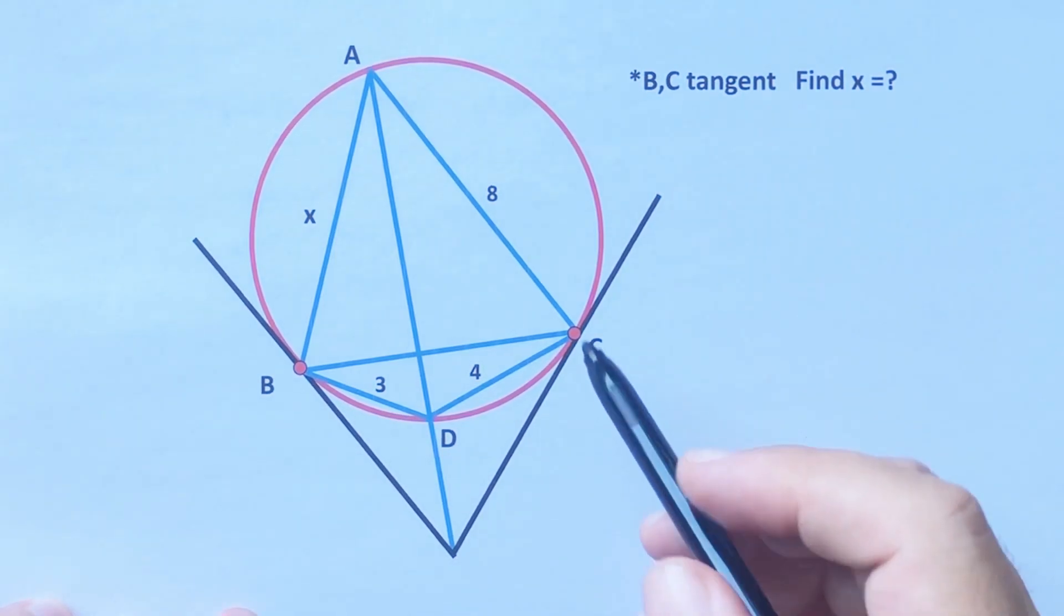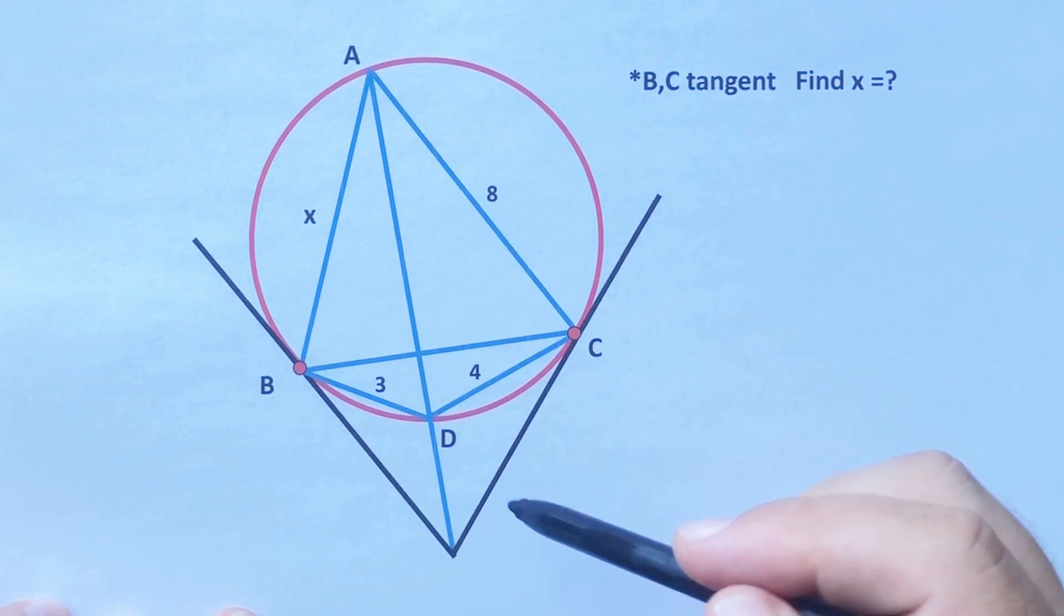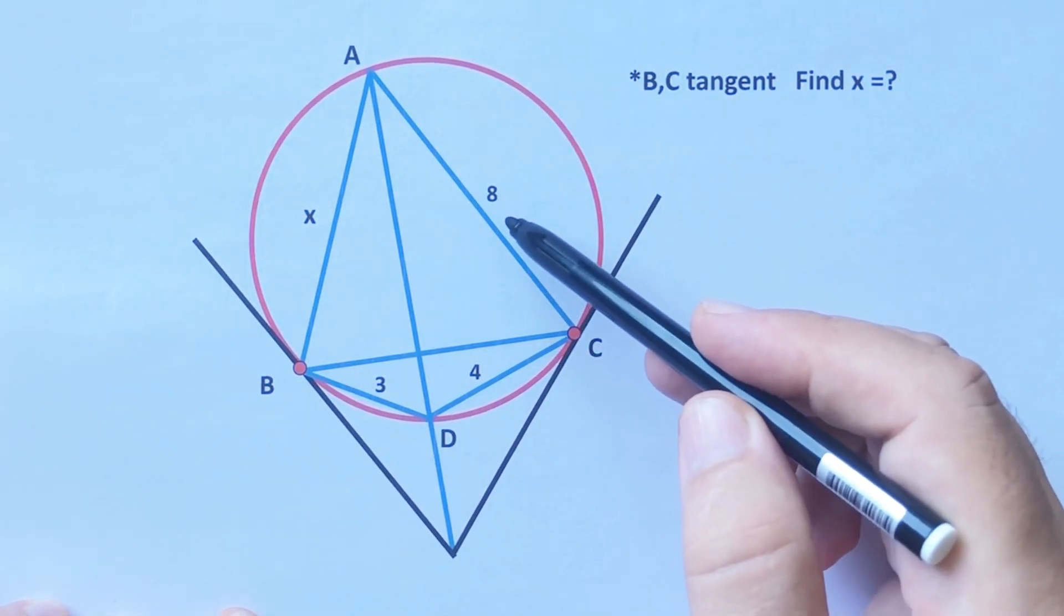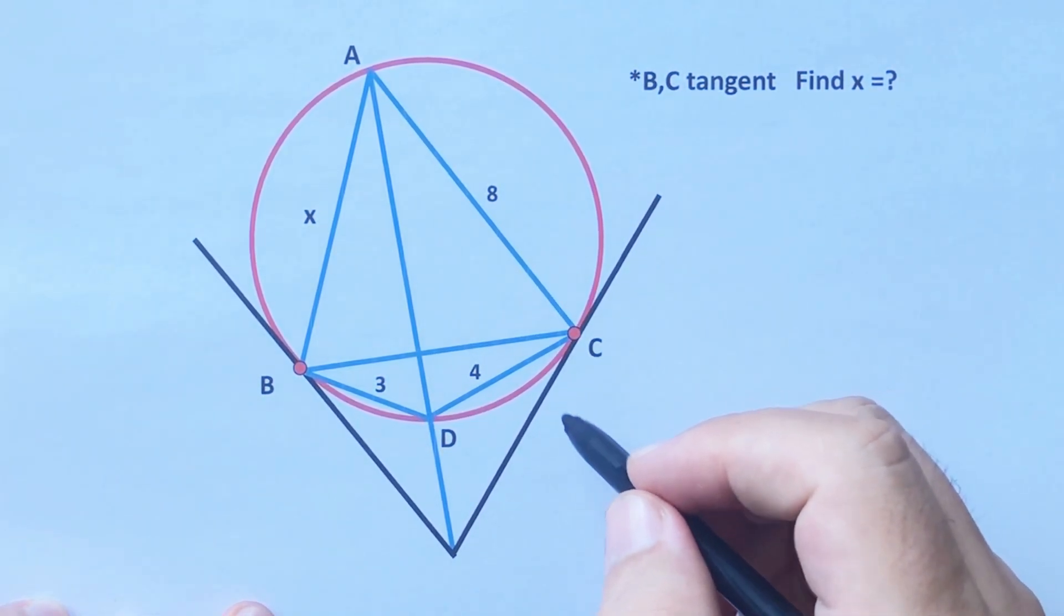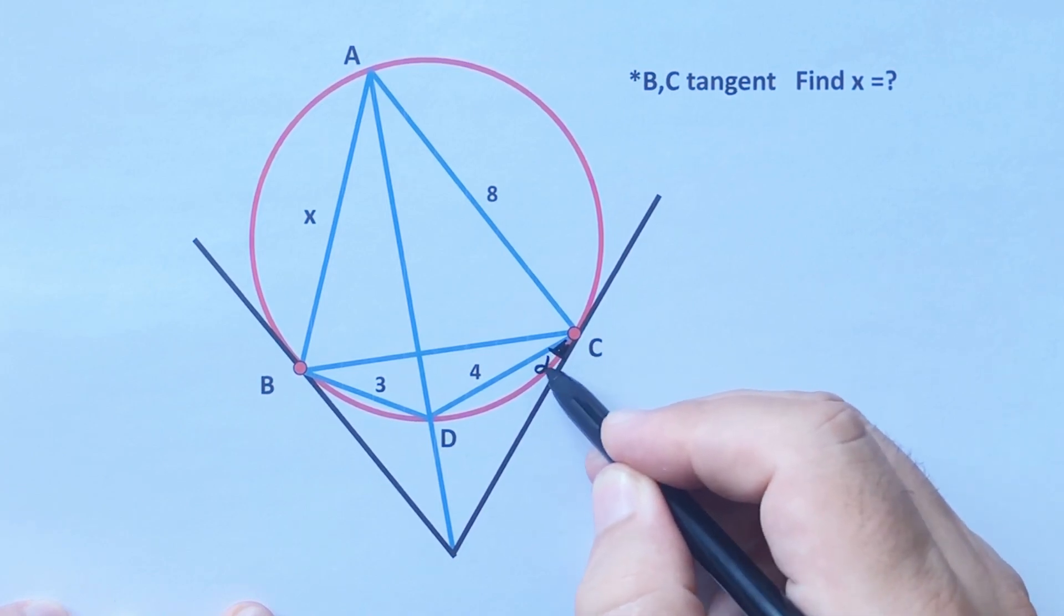Hello everyone, in this video we have one circle. Here is three, this length is four, and here is given eight units, and then x is asked. First of all, let's call here this angle alpha.